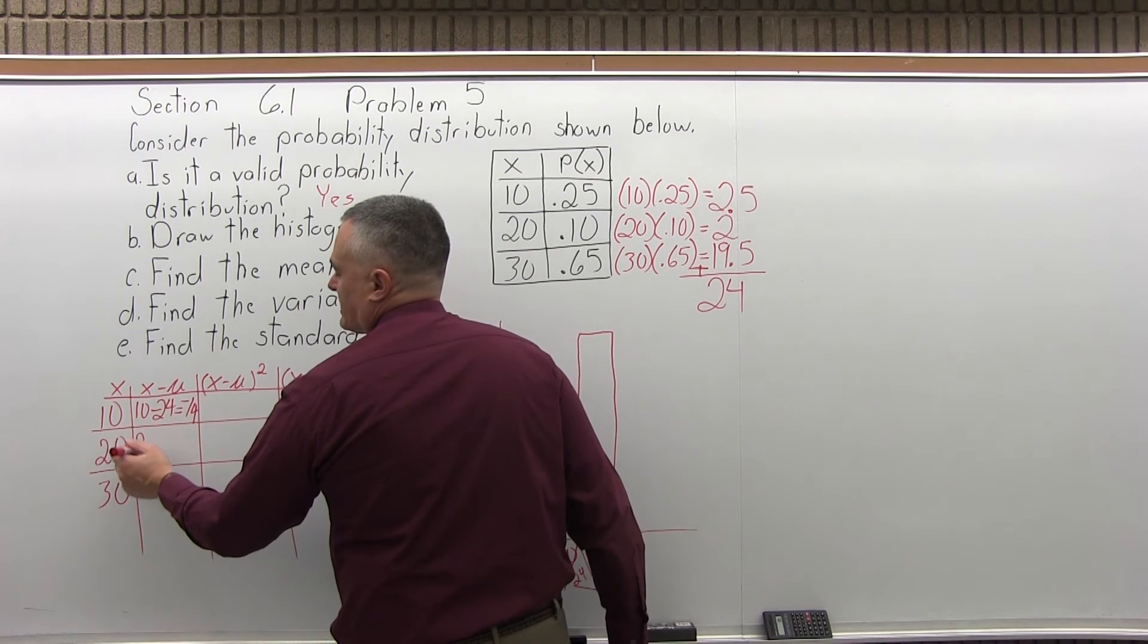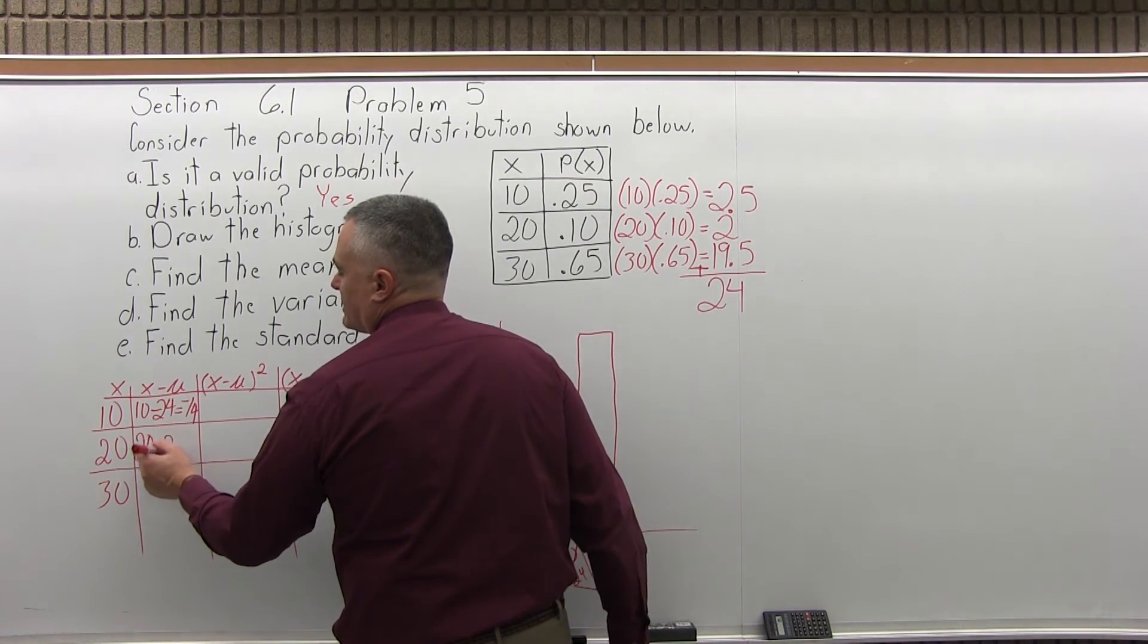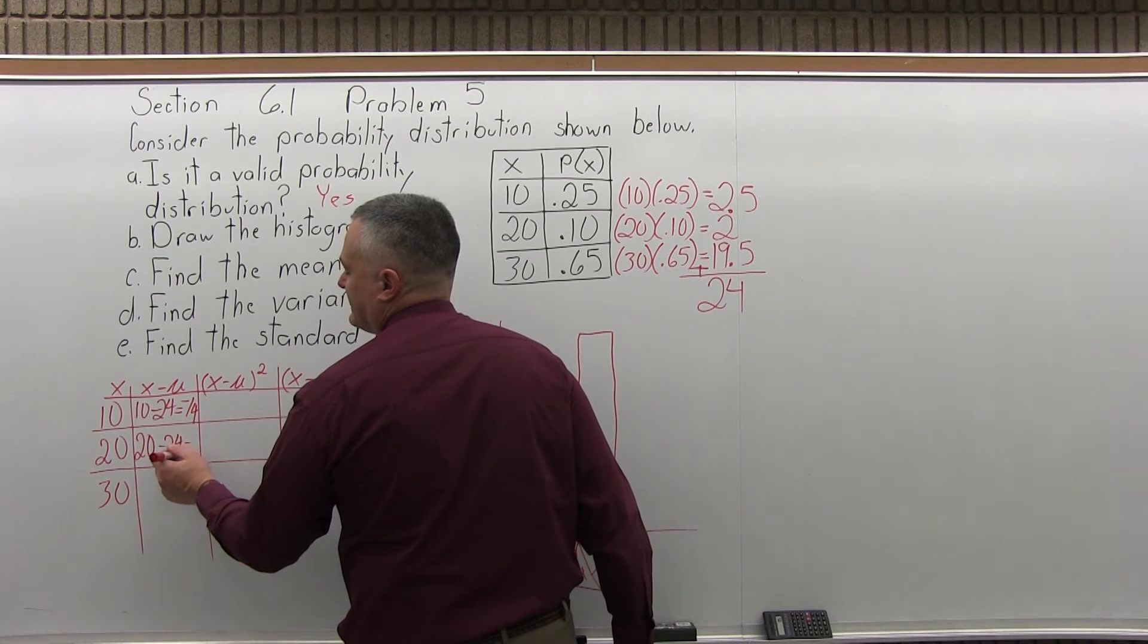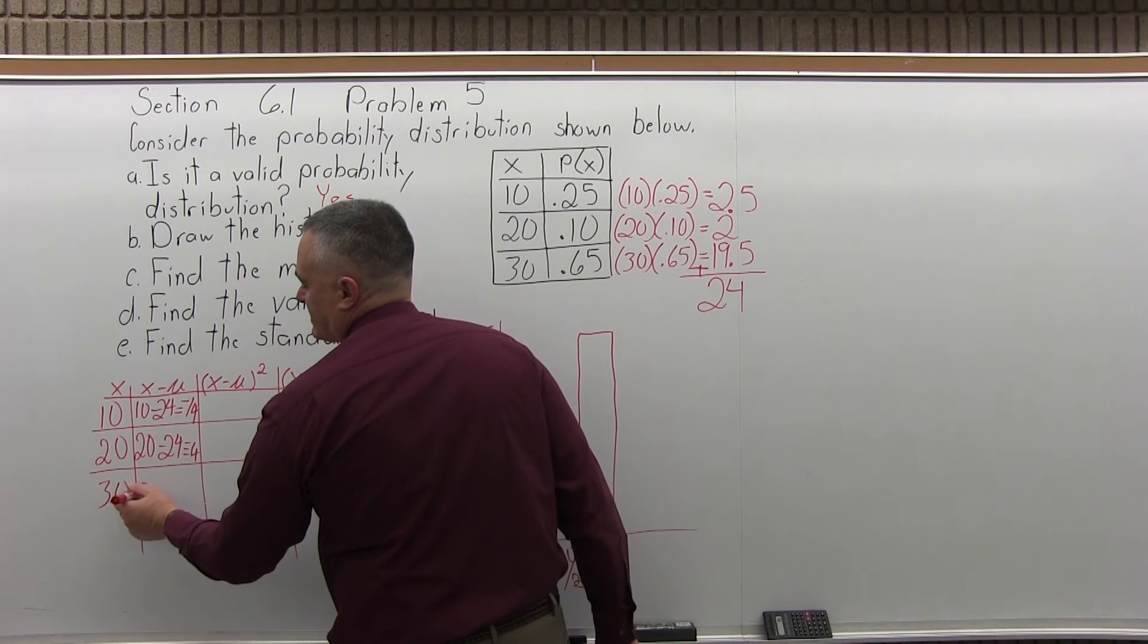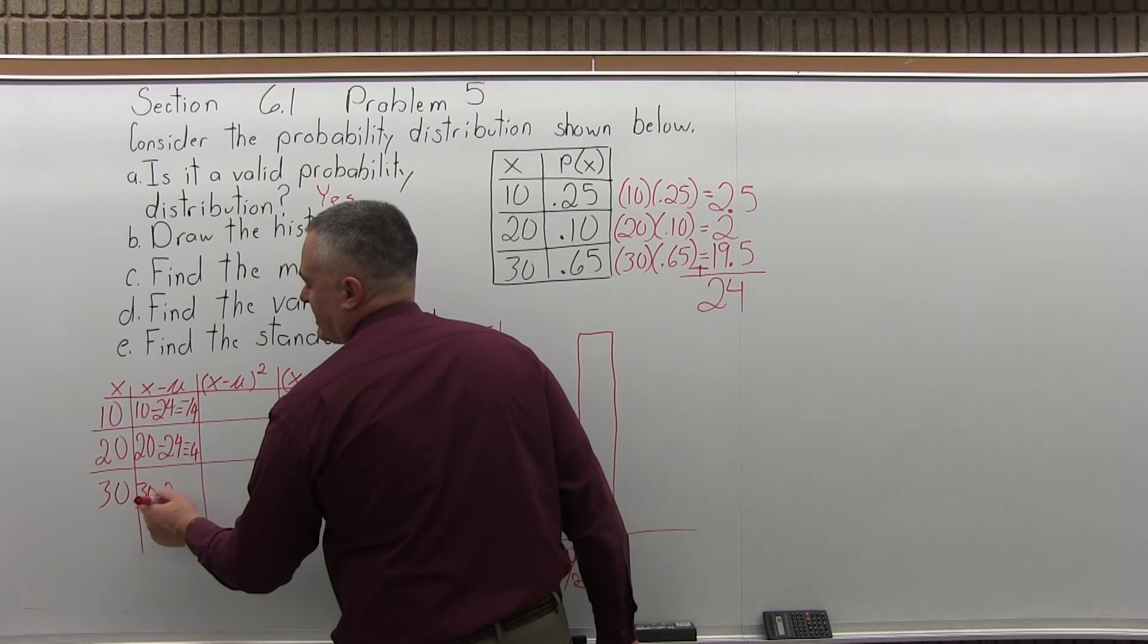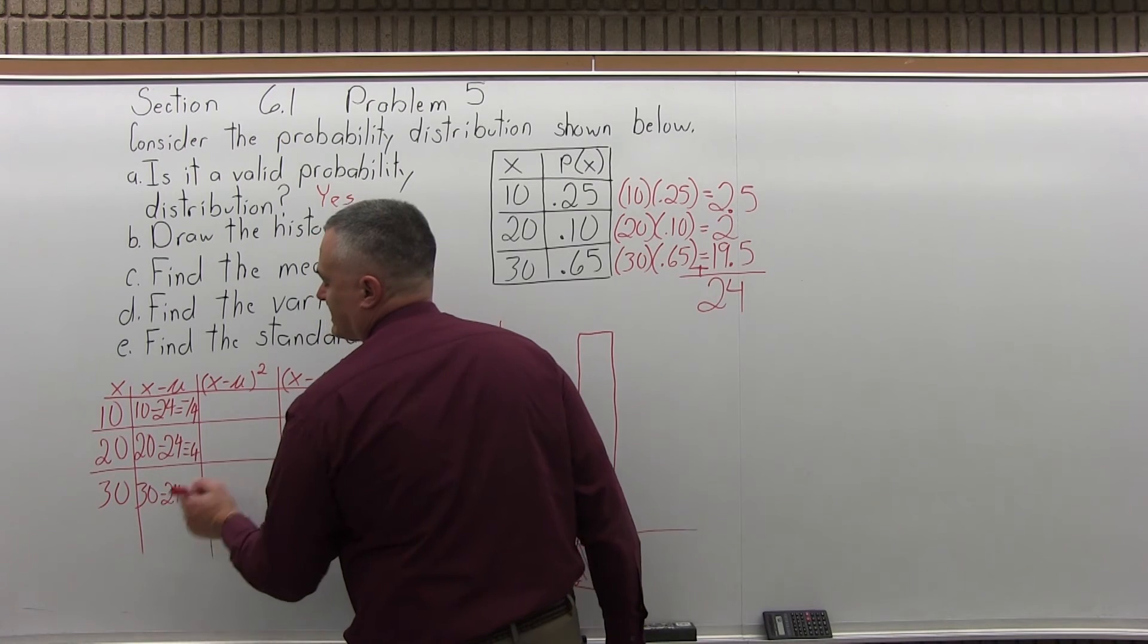And then in the middle row, x minus mu, x is 20 minus mu is 24. That is negative 4. And then in the bottom, x minus mu is 30 minus 24, which is positive 6.